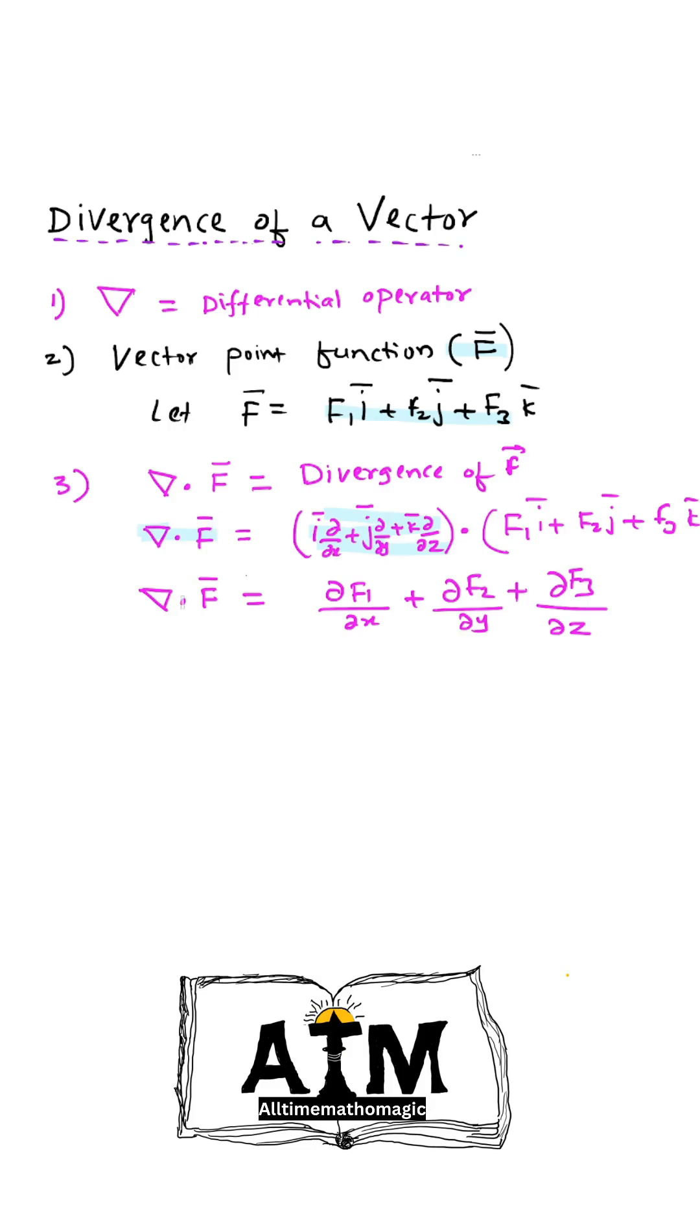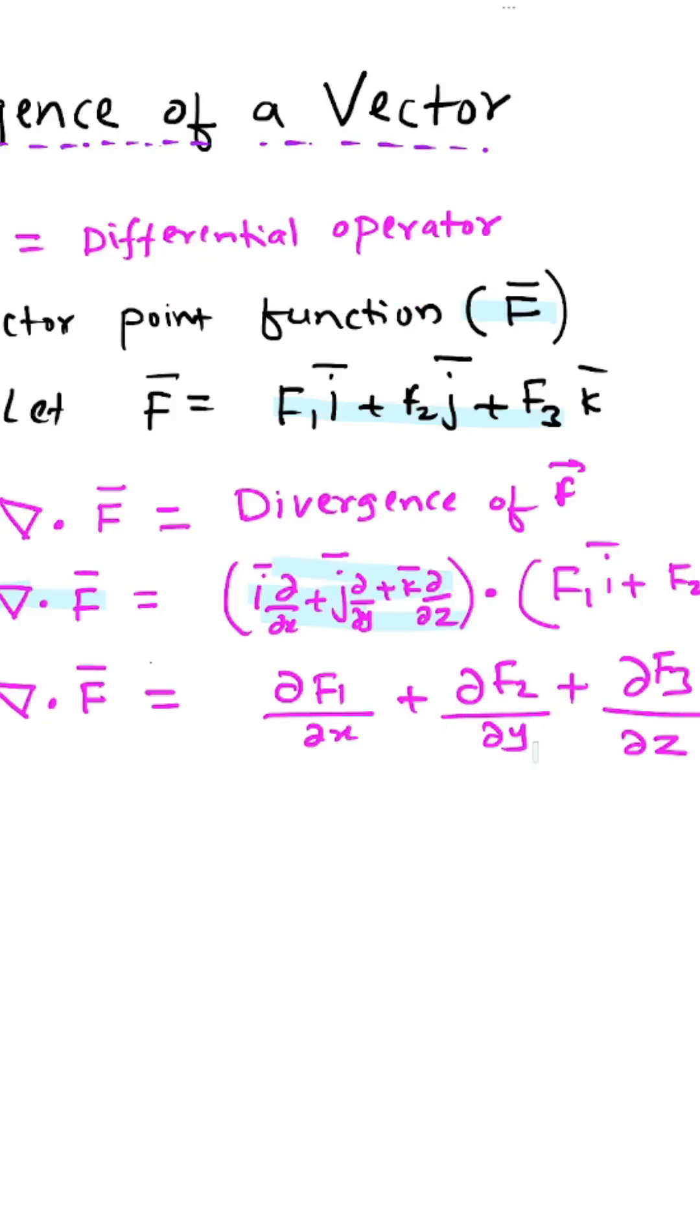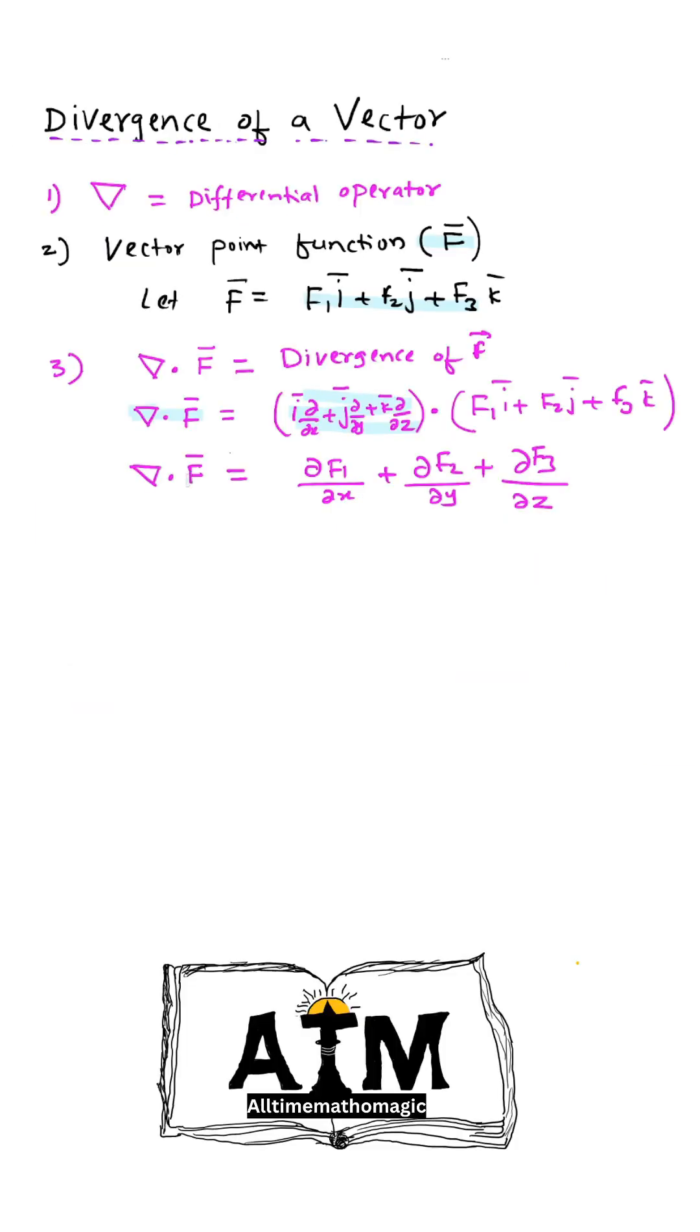This is equal to ∂F1/∂x plus ∂F2/∂y plus ∂F3/∂z. This value is a scalar. Therefore, divergence of a vector gives a scalar result.